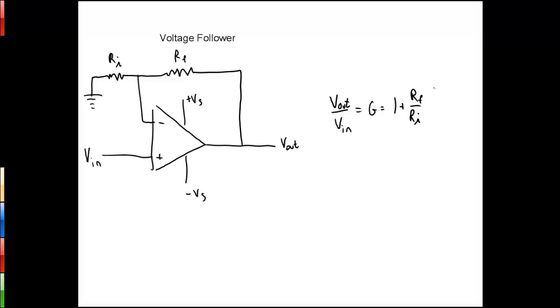Now if we were to either set RF equal to 0 or RI equal to infinite, we would end up with a gain of 1 for this particular circuit.